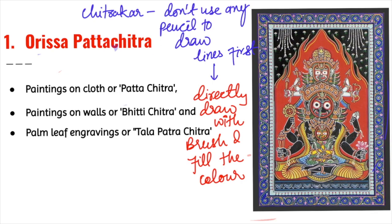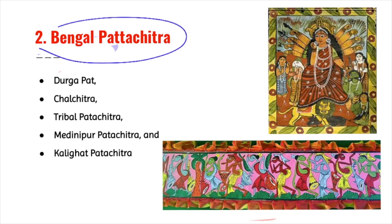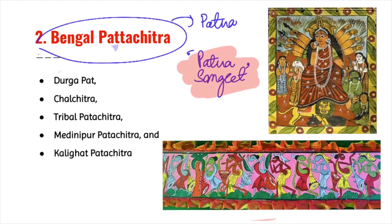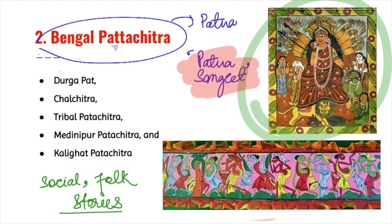In Bengal, the Patachitra painters are known as Patuas. Earlier, Patuas would travel from one village to another, singing and displaying their scroll paintings to earn a living — which is why they were also known as Patua Sangeet. Apart from mythological subjects, they also discuss social and folk stories such as family planning, the evils of the dowry system, and news events.